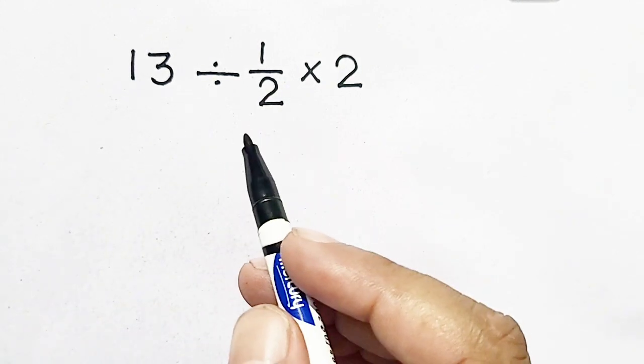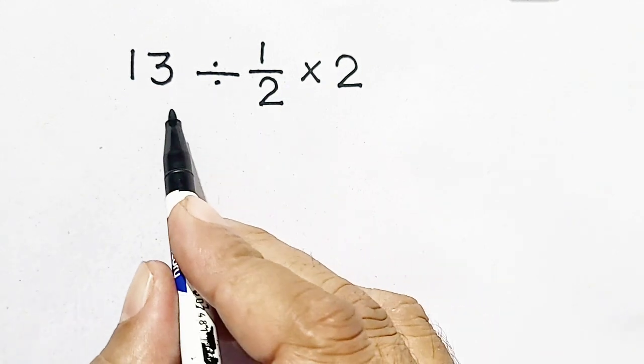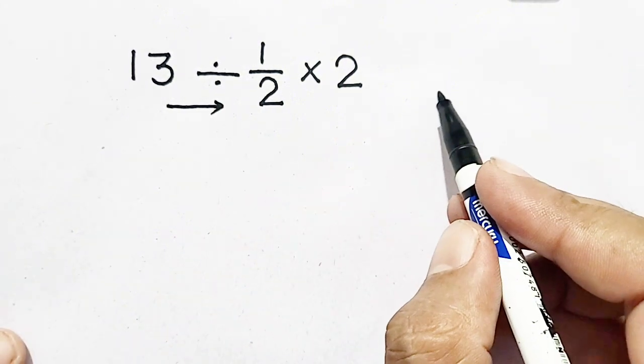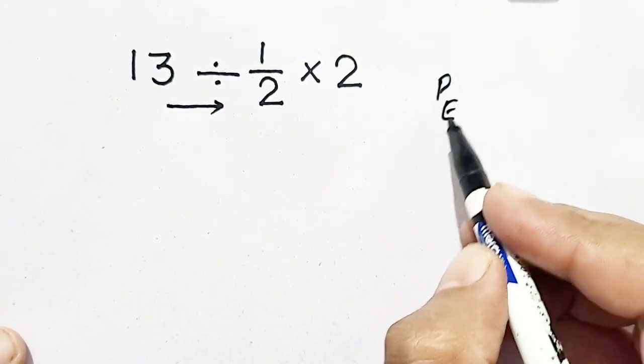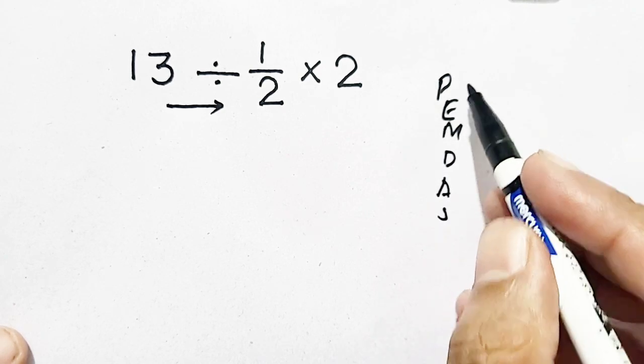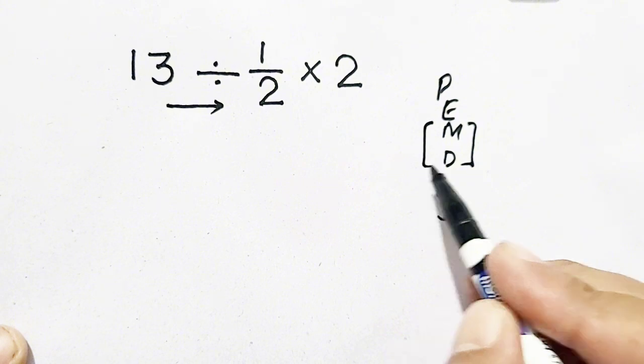To solve this accurately, we have to move from left to right and follow PEMDAS rule, which is parenthesis, exponent, then multiplication and division.